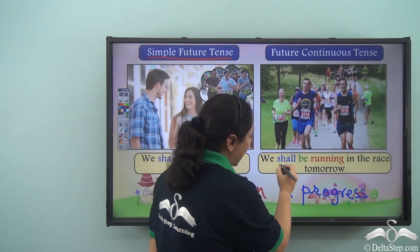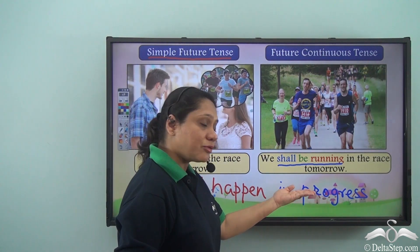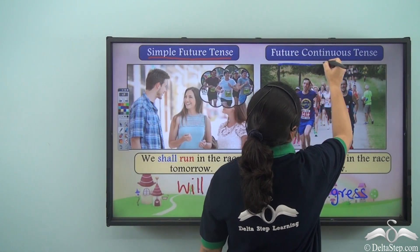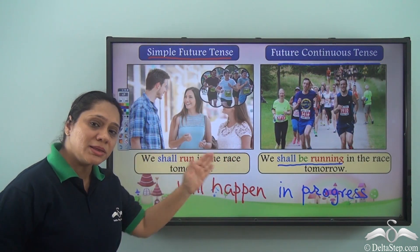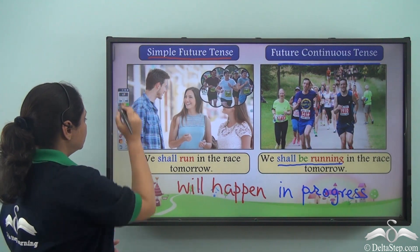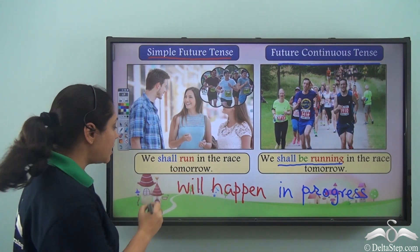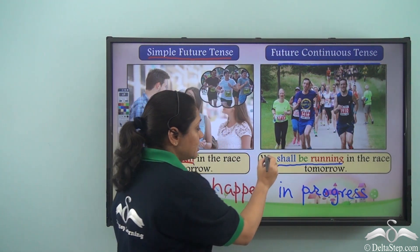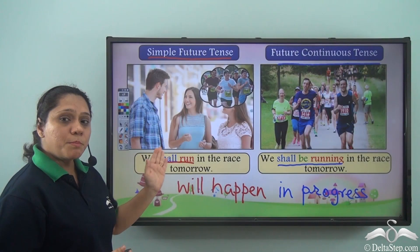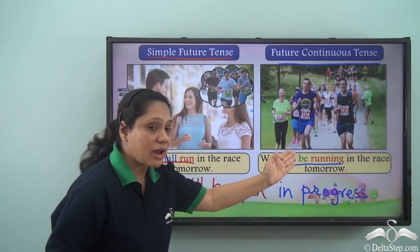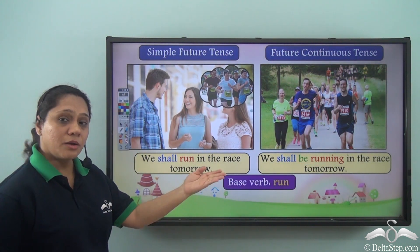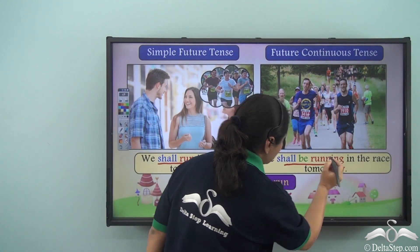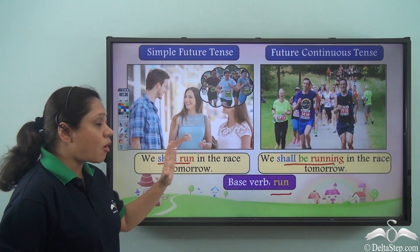The second sentence, 'We shall be running in the race tomorrow,' tells us that an action will be in progress sometime tomorrow. So 'shall be running' is showing an action that will be in progress — this sentence is in the future continuous tense. In both sentences, the verbs 'shall run' and 'shall be running' are formed from the same base verb: run.